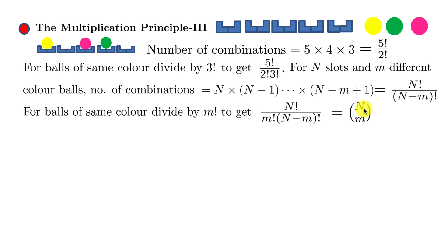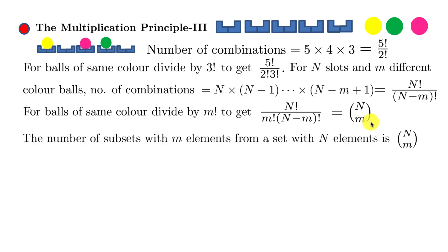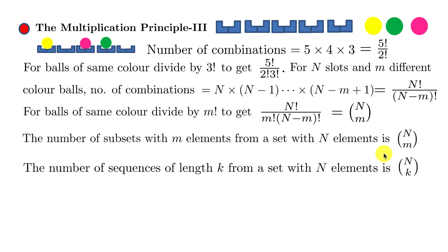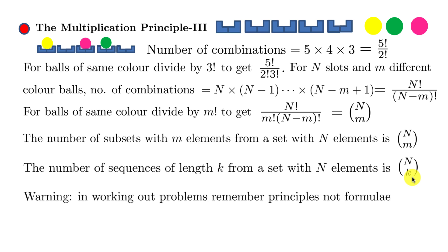So (n choose m) counts the number of subsets with m elements from a set with n elements, and equivalently the number of sequences of length k from a set of n elements. Rather than memorizing these formulas, it's best to remember the underlying principles and apply them when working out problems.